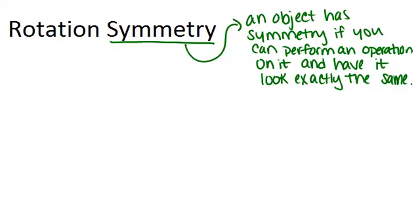An object has symmetry if you can perform an operation—a flip, a slide, a rotation, something like that—and have it look exactly the same and be in the same exact place, so that basically you couldn't tell you did anything to it at all.